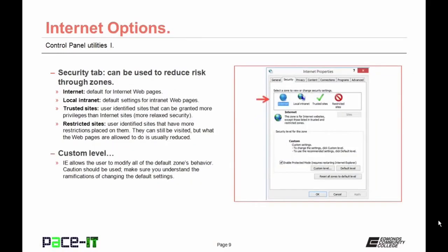The Security tab allows you to reduce risk through the use of zones. There is Internet — the default for web pages; Local Intranet — the default for local network; Trusted Sites — user-identified sites granted more privileges with relaxed security; and Restricted Sites — user-identified sites with more restrictions where what web pages can do is greatly reduced. You can set custom levels for each zone, but use caution and make sure you understand the ramifications before changing default settings.